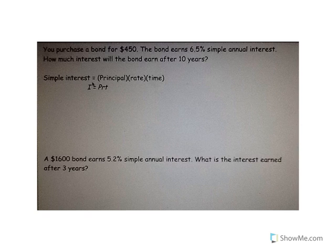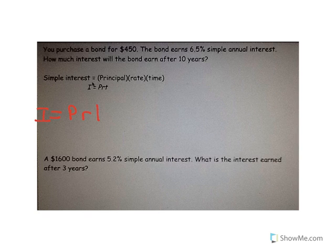In terms of the formula: you purchase a bond for $450, the bond earns 6.5% simple annual interest. How much interest will the bond earn after 10 years? The formula is Interest equals Principal times Rate times Time — I = P × R × T.